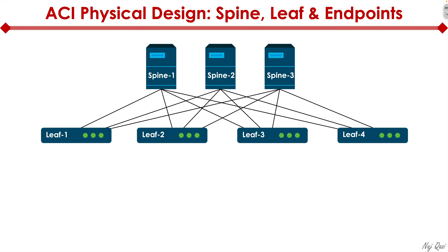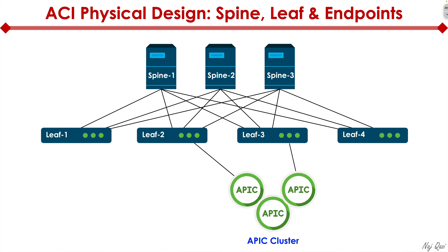Let's dig into the physical design aspect of ACI. We already talked about leaf and spine switches. All the endpoints connect into leaf switches — nothing connects directly into the spine. At a CCNA level, keep in mind that nothing plugs into the spine; everything plugs into the leaf when it comes to network endpoints. That includes APIC controllers.